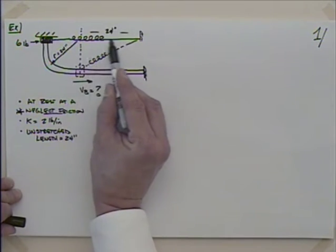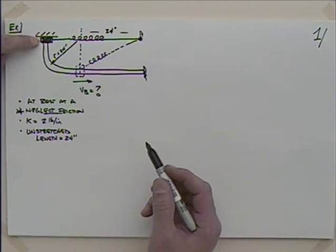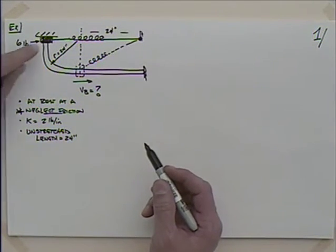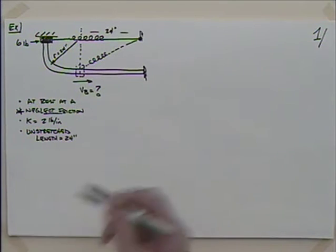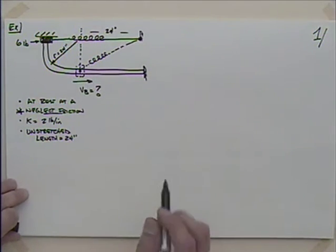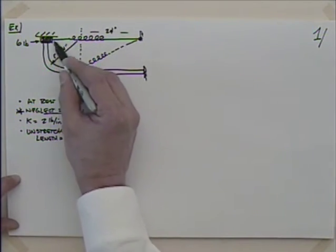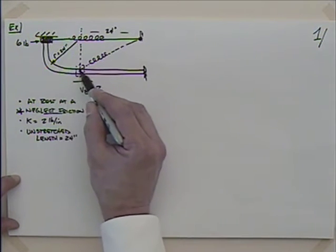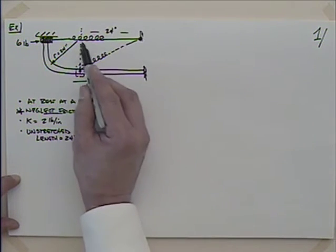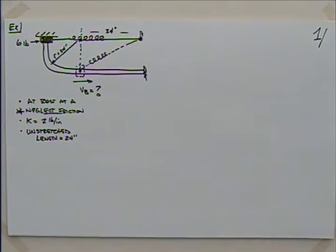We also have this spring that's stretched out, anchored at a point. Imagine you're holding this weight — six pounds — up here, then let it go. With no friction, it starts to drop, and that spring is going to pull it around the corner and have it zip past point B. We'd like to find the velocity as it goes past point B. The radius of this corner is 24 inches, and the distance from where that radius is taken to here is also 24 inches. The unstretched length of the spring is 24 inches.